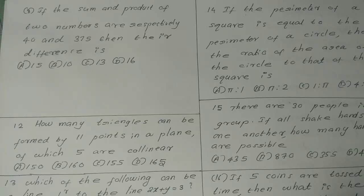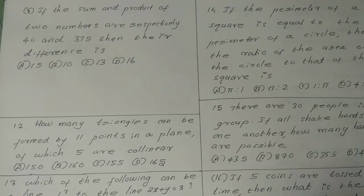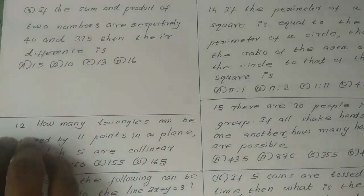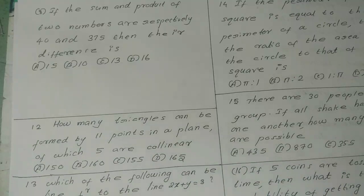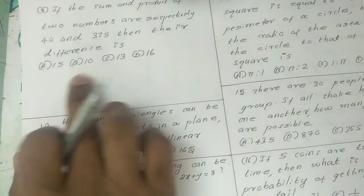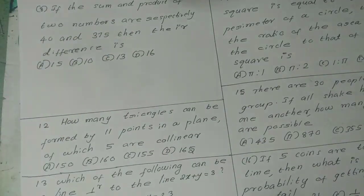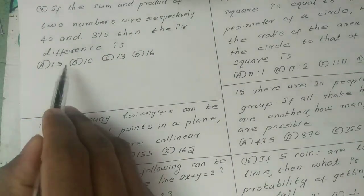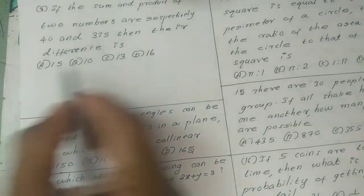Welcome to Candela Physics Academy. We will discuss in this video Category 3 Mathematics, February 2020. The question is: if the sum and product of two numbers are respectively 40 and 375, then their difference is dash. Options are 15, 10, 13, 16.